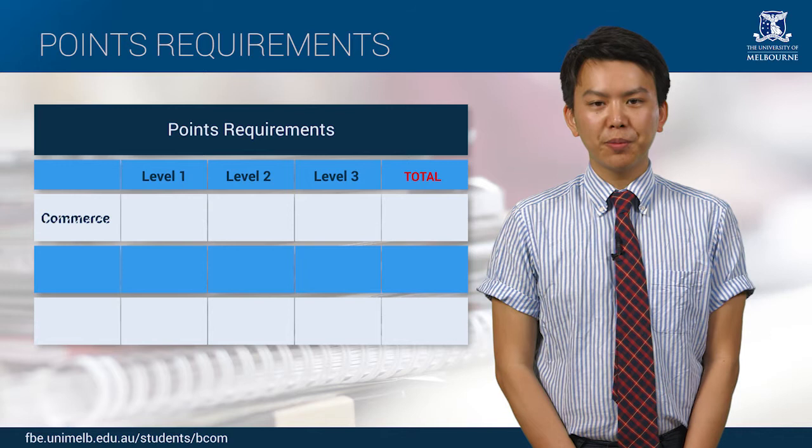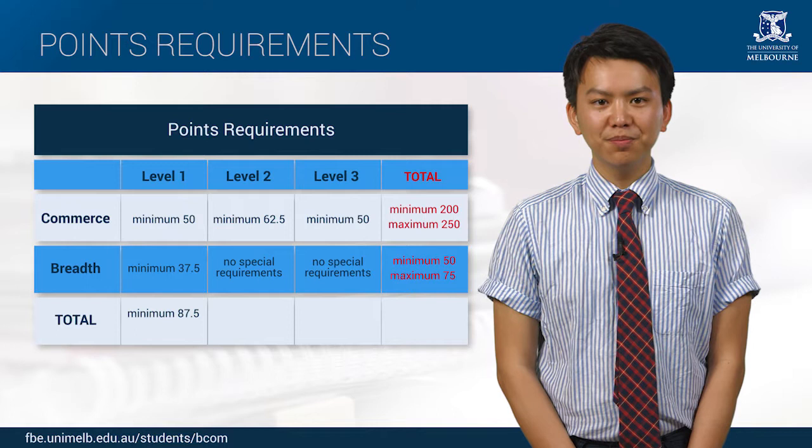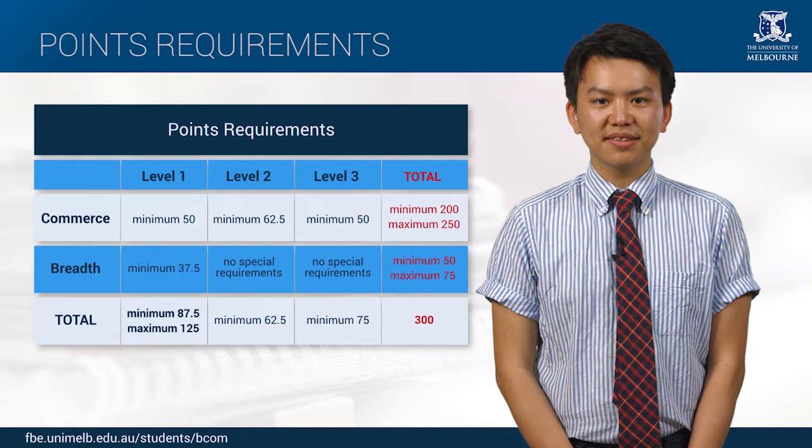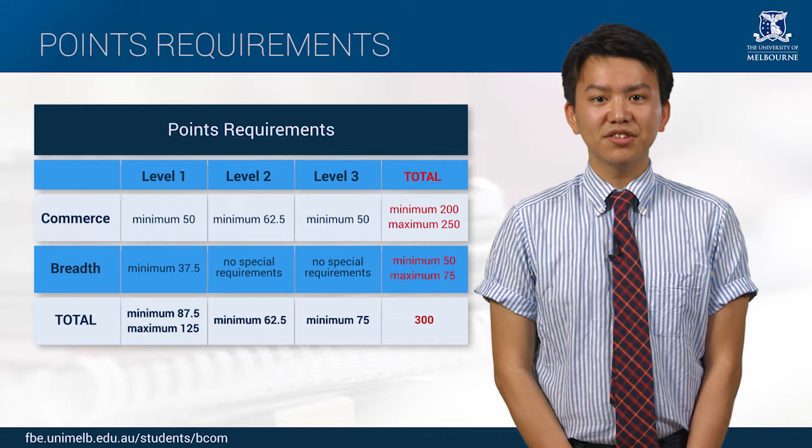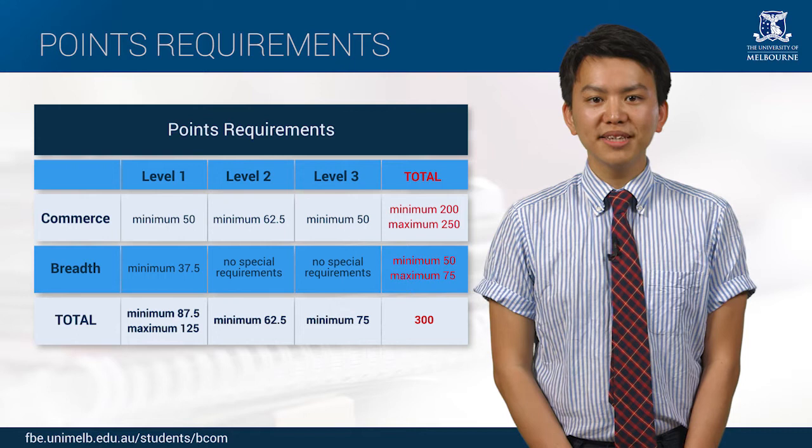As you can see there is some flexibility in how you plan your BCom, however you do need to meet set points requirements at each level. For example, you must do at least seven level one subjects and no more than ten. Level one subjects are generally subjects that you will do in your first year, level two subjects in your second year, and level three subjects in your third year. But it's not unusual for students to take a level one subject in the second and third year. You will normally take 50 points or four subjects per semester, and this is required if you want to finish the course in three years.